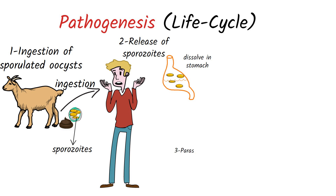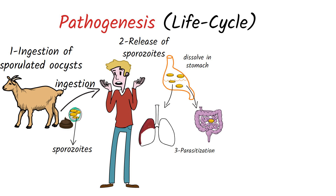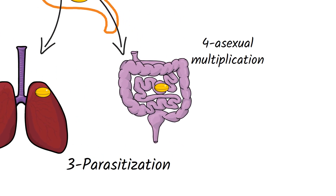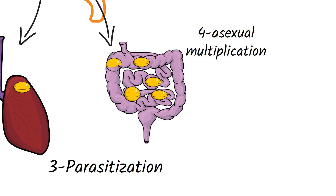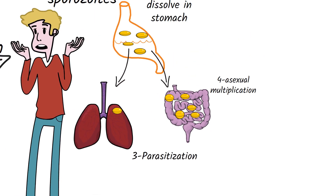The sporocytes parasitize epithelial cells of the gastrointestinal tract or other tissues such as the respiratory tract. In these cells, the parasites undergo asexual multiplication, producing multiple copies of themselves.